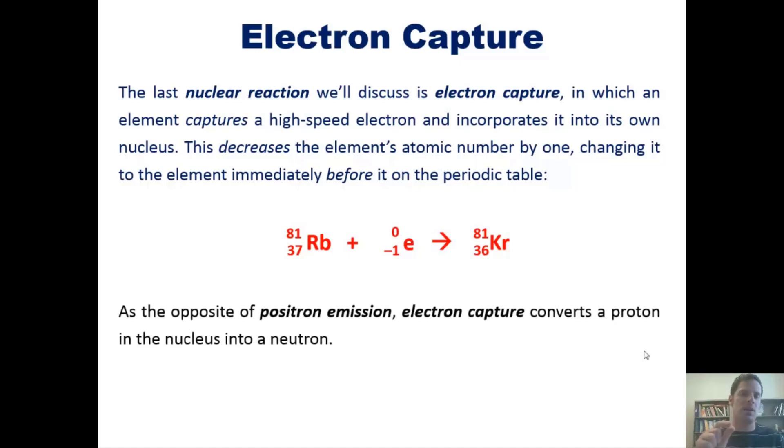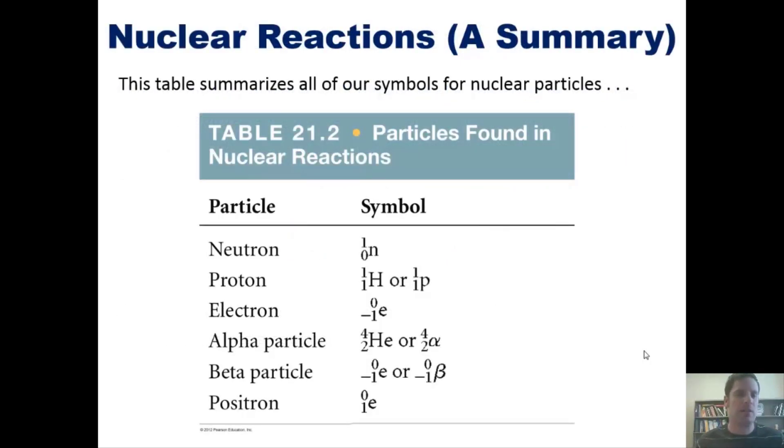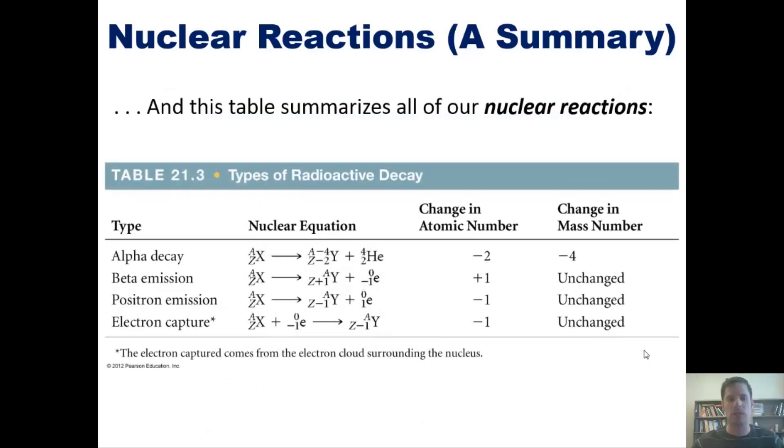So this table, taken from our text, summarizes all of our symbols for nuclear particles that we've talked about thus far. You're welcome to pause and look at this to review. Here's another table that summarizes all of our nuclear reactions: alpha decay, beta emission, positron emission, and electron capture. Once again, you're welcome to pause and take a closer look.